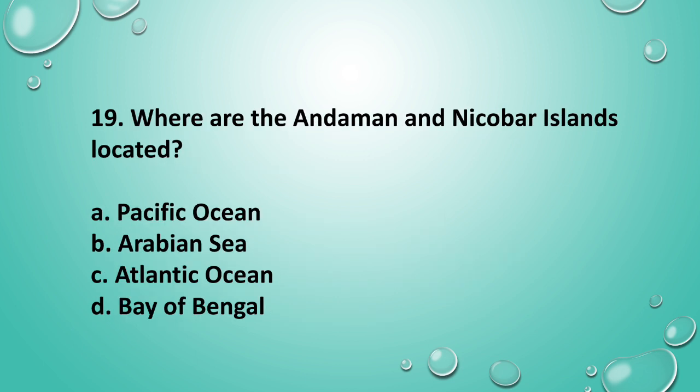Question 19: Where are the Andaman and Nicobar Islands located? The answer is option D — Bay of Bengal.